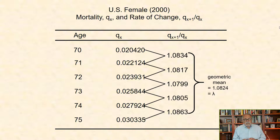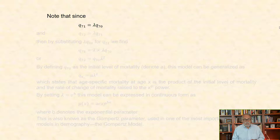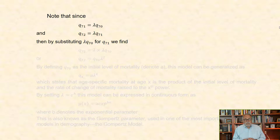Given that we have identified the constancy of change in mortality with age, we can derive a mortality model from this information. Note that since mortality at age 71 equals lambda times mortality at age 70, and mortality at age 72 equals lambda times mortality at 71, by substituting lambda Q70 for Q71, we find that Q72 equals lambda times itself. In other words, Q72 equals Q70 times lambda squared.